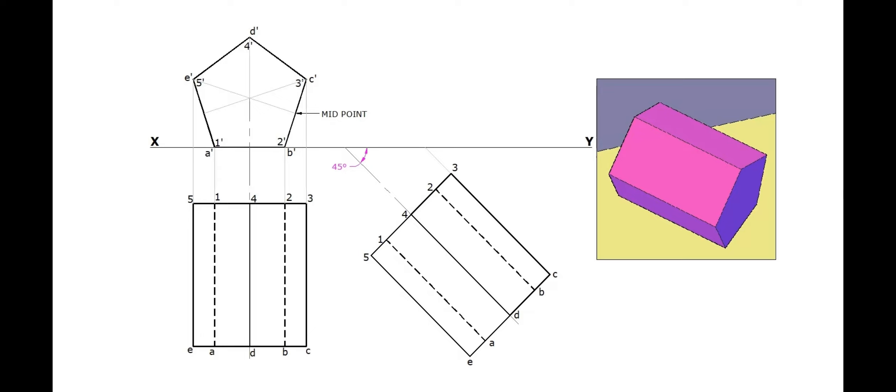Next, for drawing the second stage elevation or final elevation, project all the points of the plan above the XY line. Project all the corners of the pentagon from the first stage elevation. Trace and locate the corresponding intersection of points.